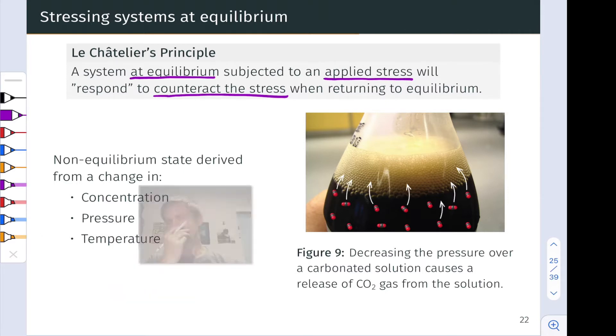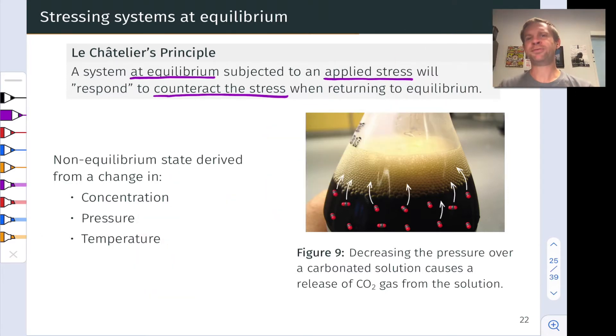Conceptually, you can think about this as we've modified the value of either Q or K to knock Q and K into an unequal situation. What the system does is returns Q to the value of K. But in so doing, the system moves in one direction or another—either in the forward direction or reverse direction. We can set that up to move in a desirable direction for us.